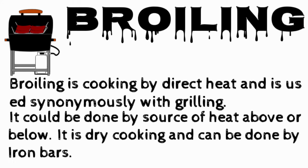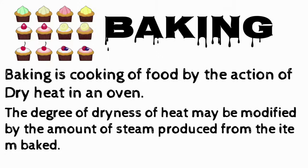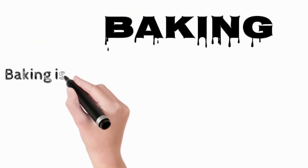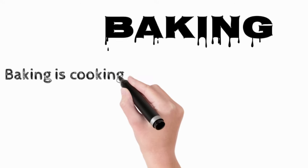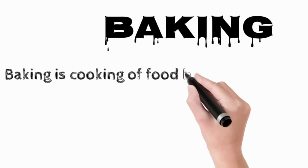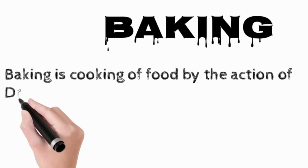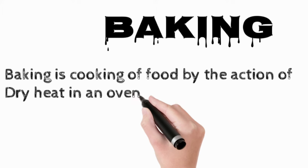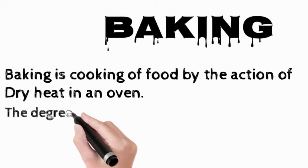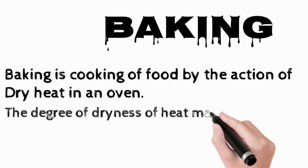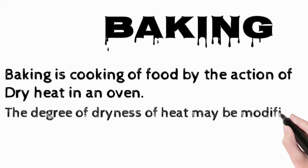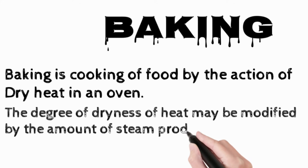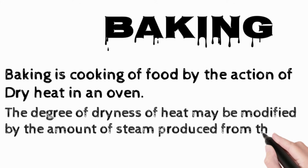Baking: baking is the cooking of food by the action of dry heat in an oven. The degree of dryness of the heat may be modified by the amount of steam produced from the item being baked. During baking, the mixture or moisture in the product expands by air, steam, or carbon dioxide.